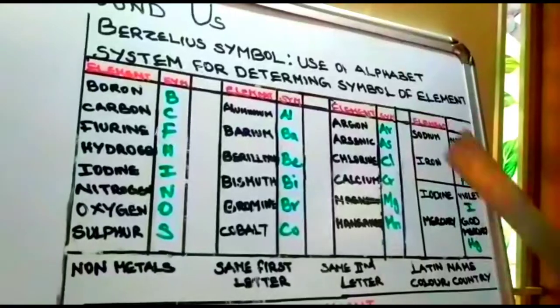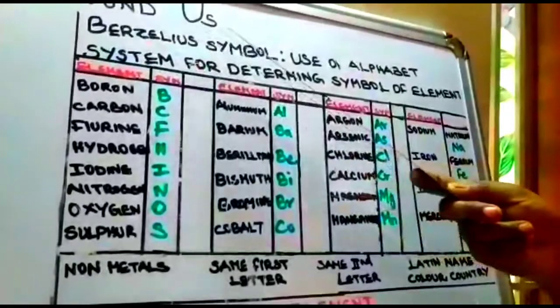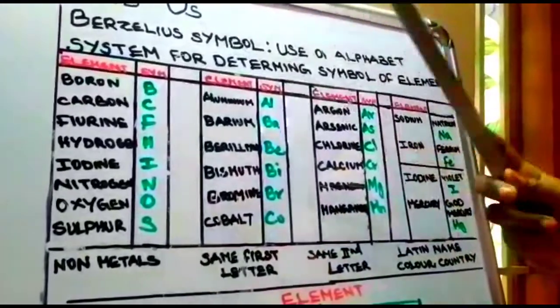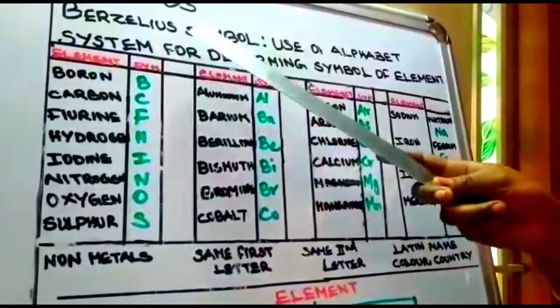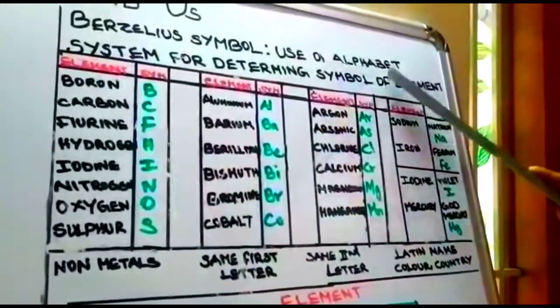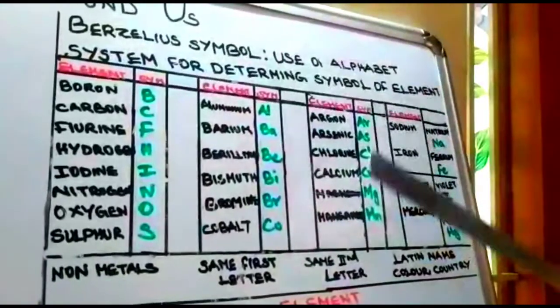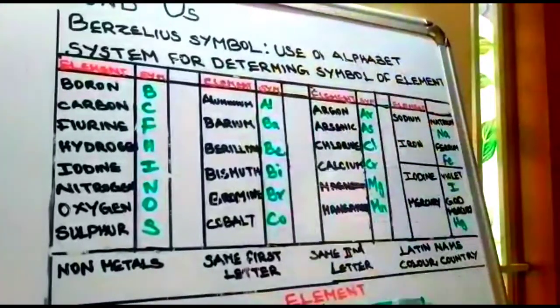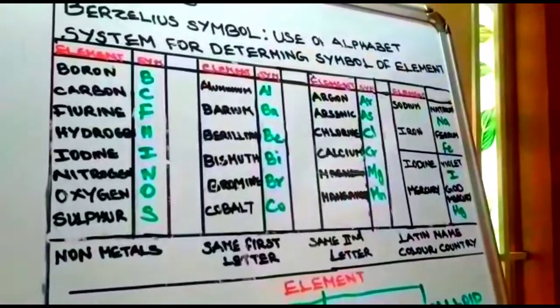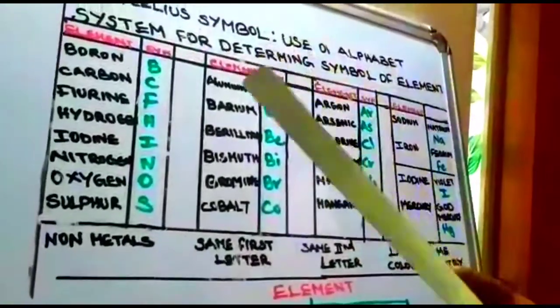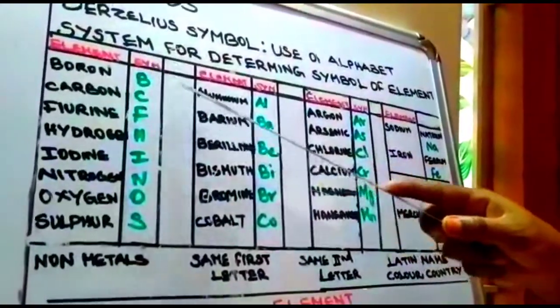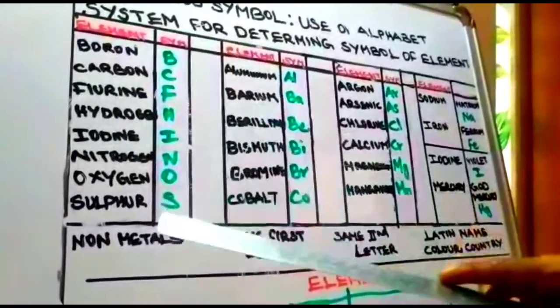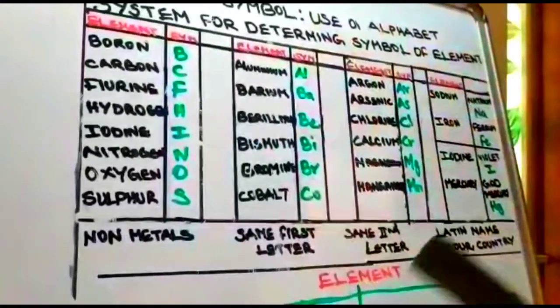Now we use Berselius symbol. John Jacob Berselius formed a different type of symbol for elements where alphabets are used as symbols. Usually, symbols of elements are represented by their first letter in uppercase. For example: boron capital B, carbon capital C, fluorine F, hydrogen H, iodine I, nitrogen N, oxygen O, sulfur S.